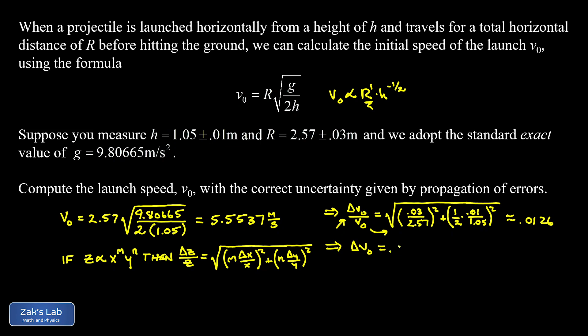Now, to solve for the actual uncertainty in the velocity, I still have to multiply both sides by that v₀. So I'm going to take this previous answer, 0.0126, the relative uncertainty in velocity, and then multiply it by the velocity itself, which was like 5.5537. And this is going to give us an uncertainty on our velocity. And that turns out to be about 0.0700.